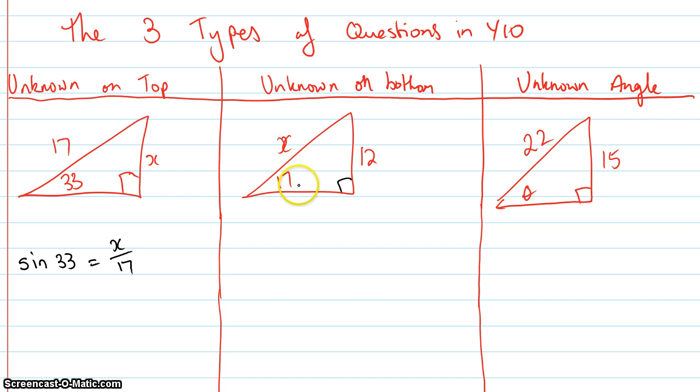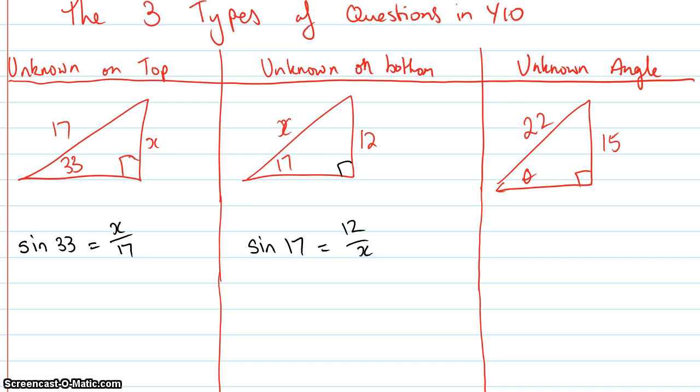So again, I've got 17 degrees, here's my side length of 12 and x, so again I'm using opposite and hypotenuse. So sine 17 equals 12 over x. Here's the clear distinction: this one has the unknown on the top—the x is on the top of the fraction—whereas here the x is on the bottom of the fraction. Very similar way of working them out, but slightly different.